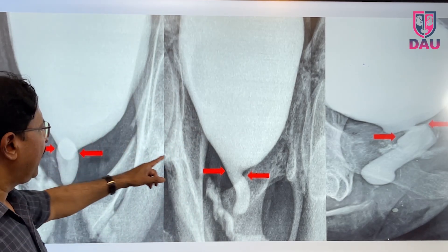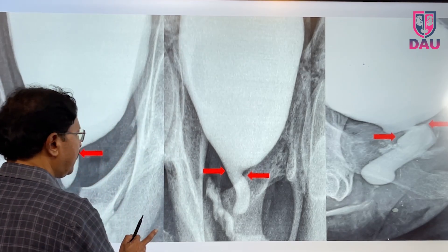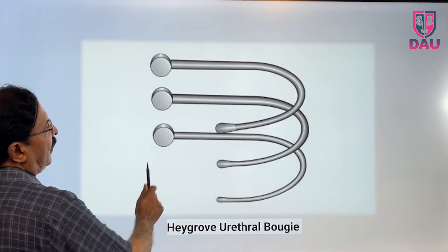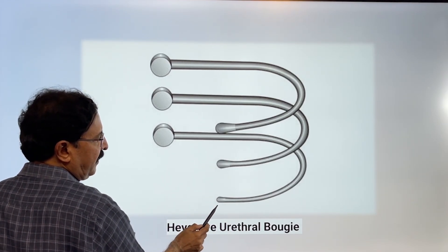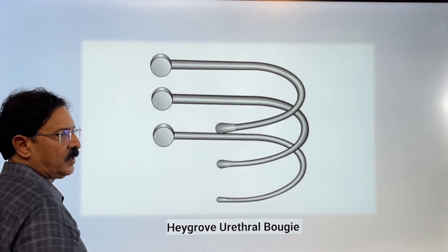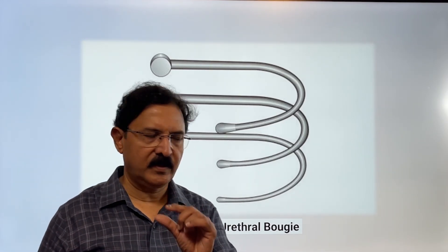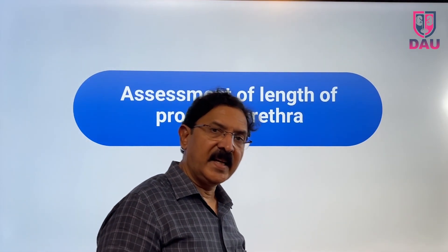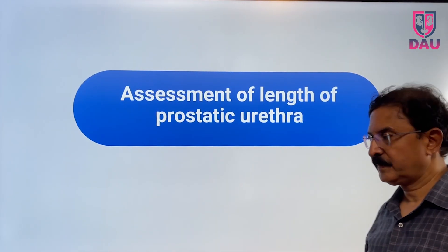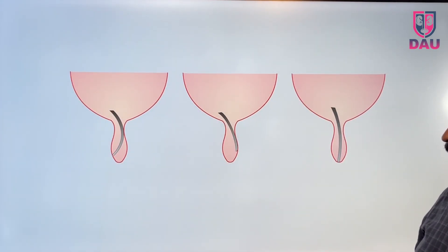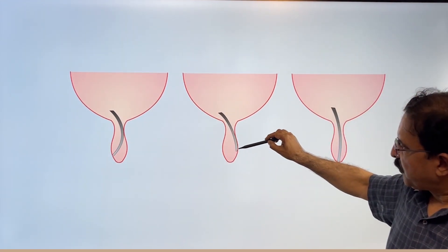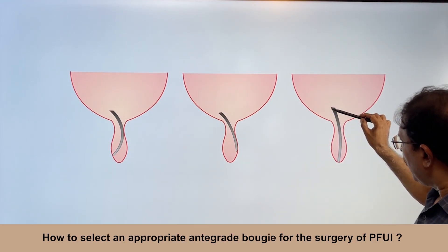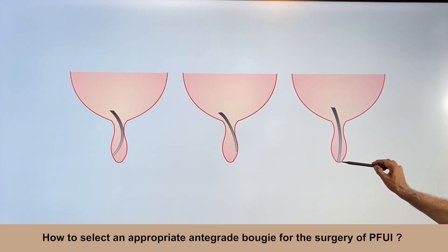The bladder neck caliber is important for you, and you have to decide, out of the set of Haygrove bougies that you have, the correct tip size. The tip size is very variable. Depending upon the caliber of the bladder neck, choose the proper tip size of the Haygrove urethral bougie. The next point is about the length of the prostatic urethra. When you advance this bougie from the top, it should not stop midway — it should go right down to the apex. That is the correct placement of the antegrade bougie.